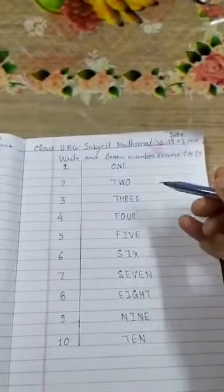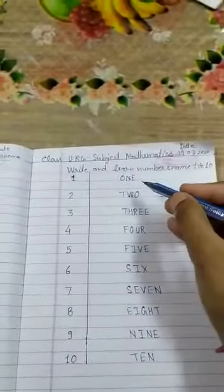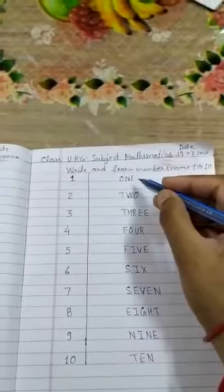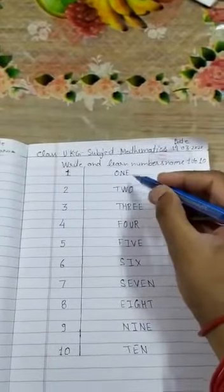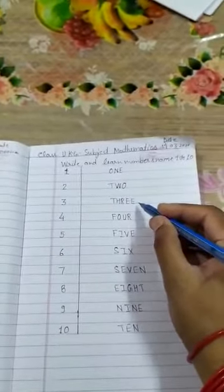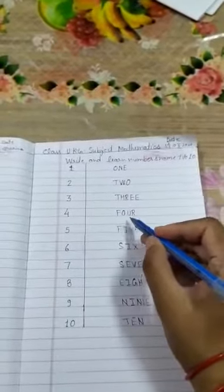Now repeat them. O, N, E — 1. T, W, O — 2. T, H, R, E — 3.